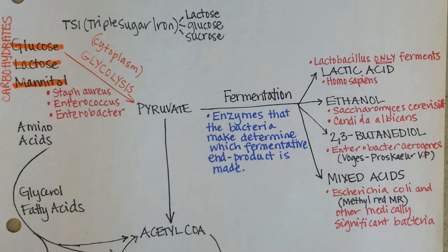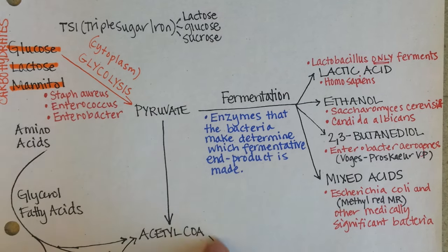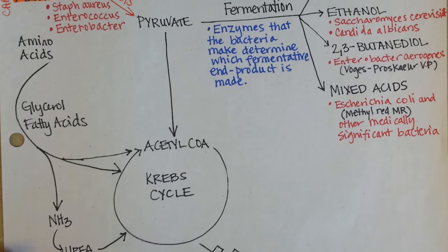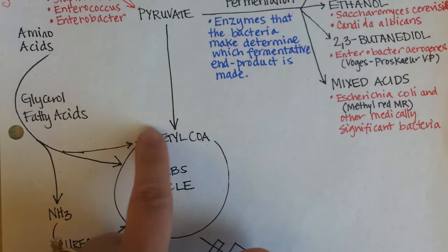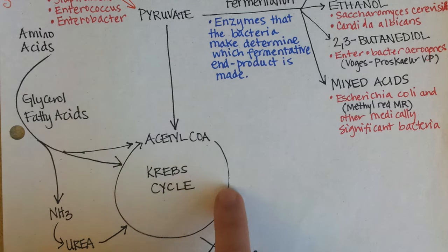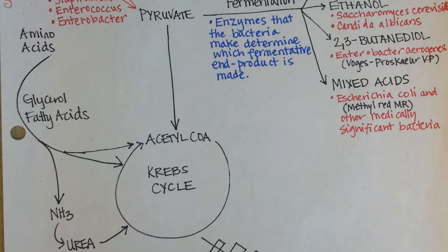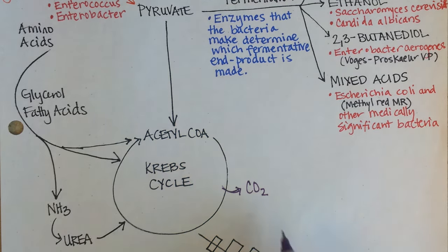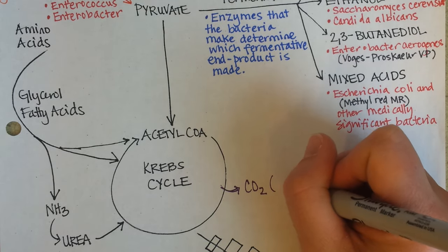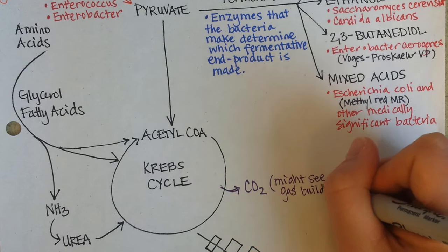If oxygen or another very strong electronegative element is available, pyruvate can also enter the Krebs cycle — also called the citric acid cycle, named for the recycling of a citric acid compound. The cycle represents a repeating series of enzyme-driven reactions, producing a little bit of ATP and also carbon dioxide as a waste product. So if bacteria are performing the Krebs cycle, you might see gas production in the test tube.